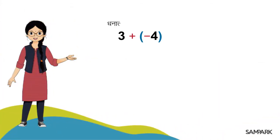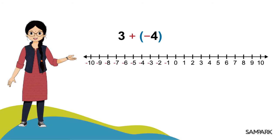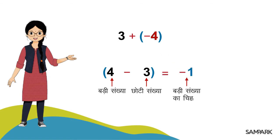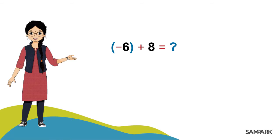Abhi tak humne ek Dhanatmak aur ek Rinatmak Poonank ko jodna seekha. Lekin kya har baar inhe jodte ya ghataate waqt hamen Sankhya Rekha banani hogi? Nahi — iska ek aasaan tarika bhi hai. Hamen bas ye karna hai ki chinhon ko chhodte hue badi sankhya mein se choti sankhya ko ghata dena hai, aur is mile uttar mein badi sankhya ka chinh laga dena hai. Jaise minus 6 plus 8 nikalne ke liye pehle chinhon ko hatao. Ab badi sankhya 8 mein choti sankhya 6 ko ghatane par 2 milta hai, aur badi sankhya 8 ka chinh hai plus, to minus 6 plus 8 hua 2.